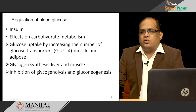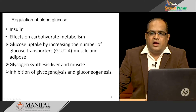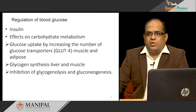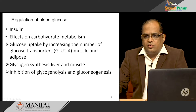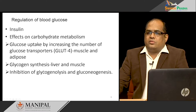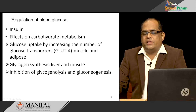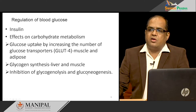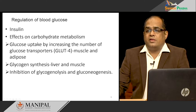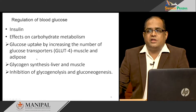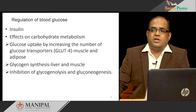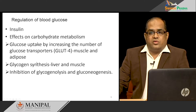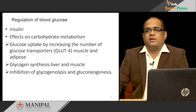Insulin also inhibits glycogenolysis — the breakdown of glycogen into glucose — because already there is enough glucose in the blood and cells, so there is no need to break the already stored glycogen. Insulin also inhibits gluconeogenesis, which is the synthesis of new glucose from non-carbohydrate sources. That is also not required because you are in a fed condition with enough glucose in the body. So these two glucose-producing pathways are inhibited, whereas glucose utilization pathways and storage pathways are activated by insulin.